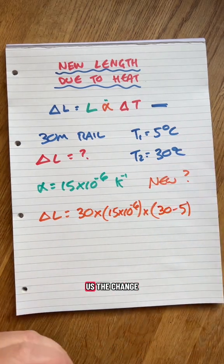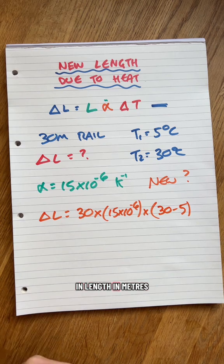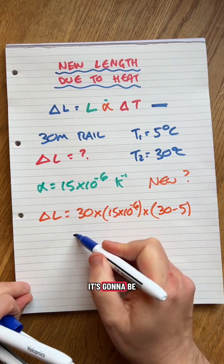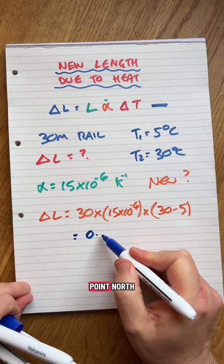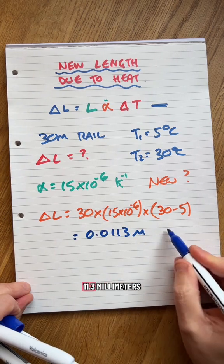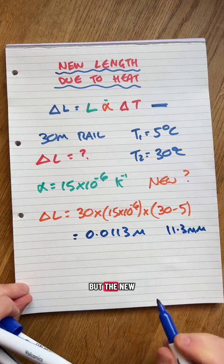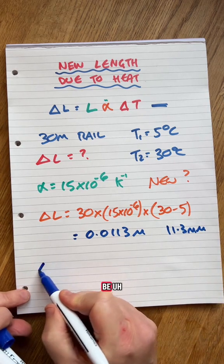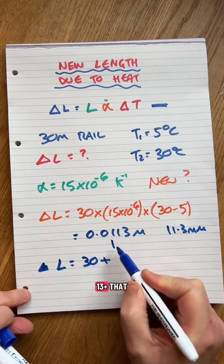This will give us the change in length in meters. It's going to be something like 0.0113 meters, 11.3 millimeters. But the new length is going to be, the new length is going to be 30 plus that, because it's expanded by that much.